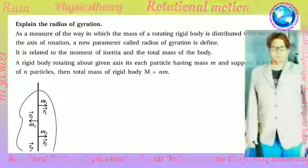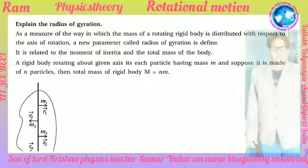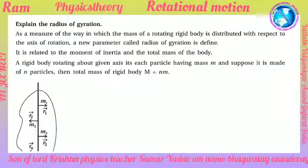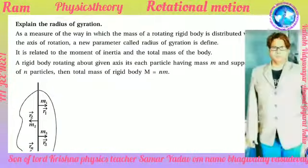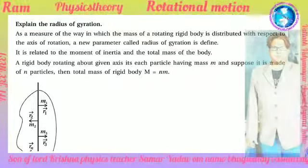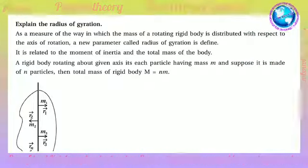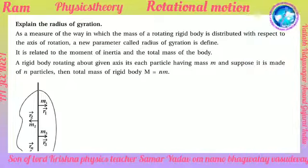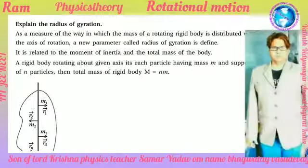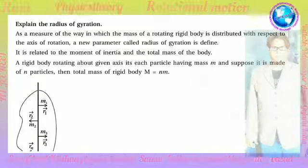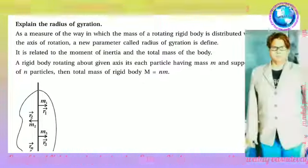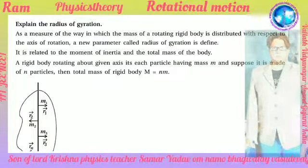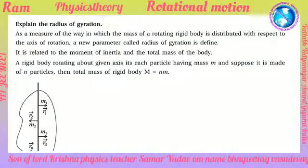Explain the radius of gyration. As a measure of the way in which the mass of a rotating rigid body is distributed with respect to the axis of rotation, a new parameter called radius of gyration K is defined. It is related to the moment of inertia and the total mass of the body.